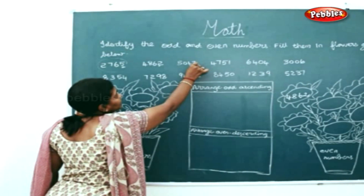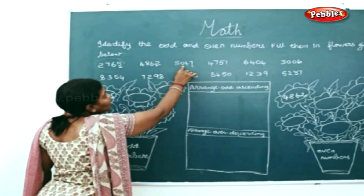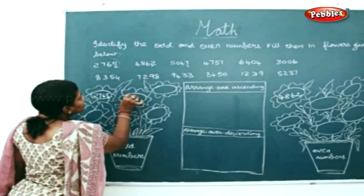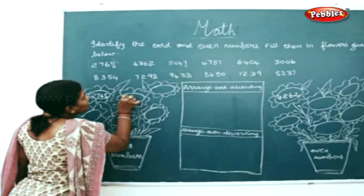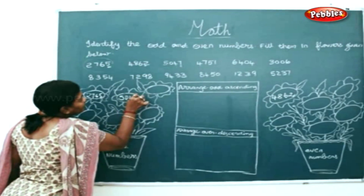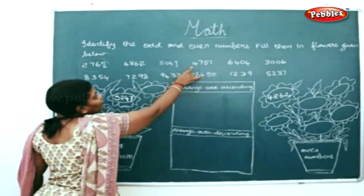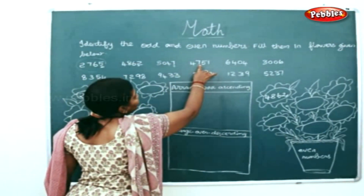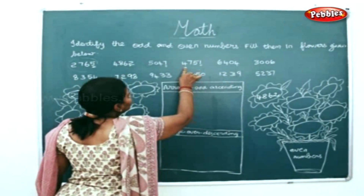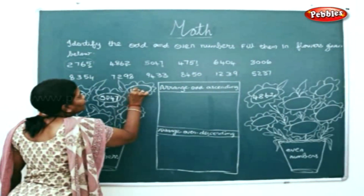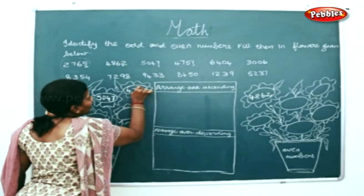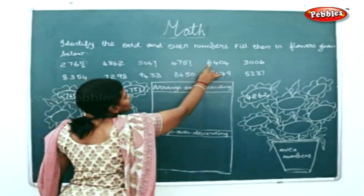Next, 5047 — 7 is an odd number, so I'll write 5047 in the odd numbers place. Next, 4751 — 1 is again an odd number, so I'll write 4751 in the odd numbers place.